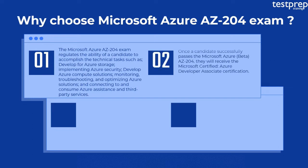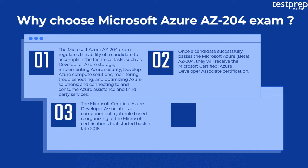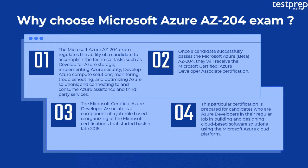Once a candidate successfully passes the Microsoft Azure Beta AZ-204, they will receive the Microsoft Certified Azure Developer Associate certification. The Microsoft Certified Azure Developer Associate is a component of a job role-based reorganizing of the Microsoft certifications that started back in late 2018. This particular certification is prepared for candidates who are Azure developers in their regular job, building and designing cloud-based software solutions using the Microsoft Azure Cloud Platform.